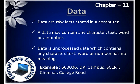Data are raw facts stored in a computer — data is content. Data can be a character, a text, a word, or a number. So data can be any character, any word, any text, or any number. Data is unprocessed and can contain any character, text, word, or number.